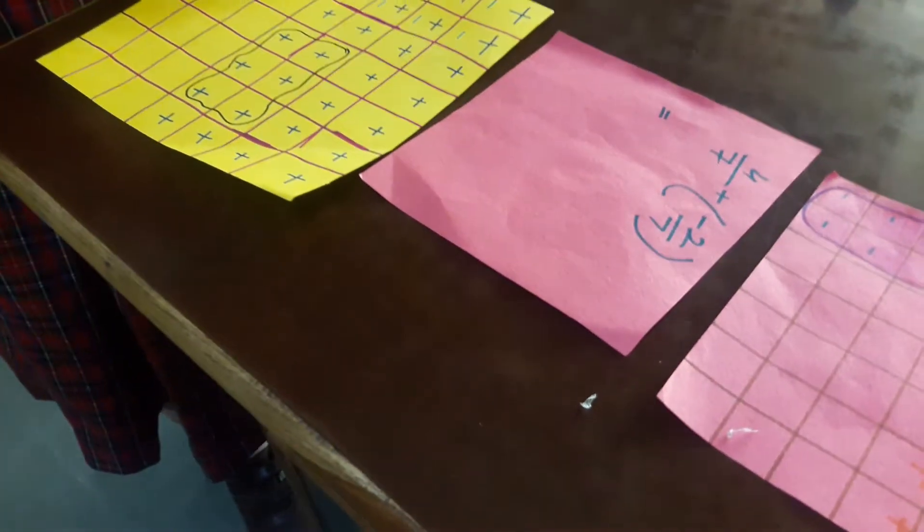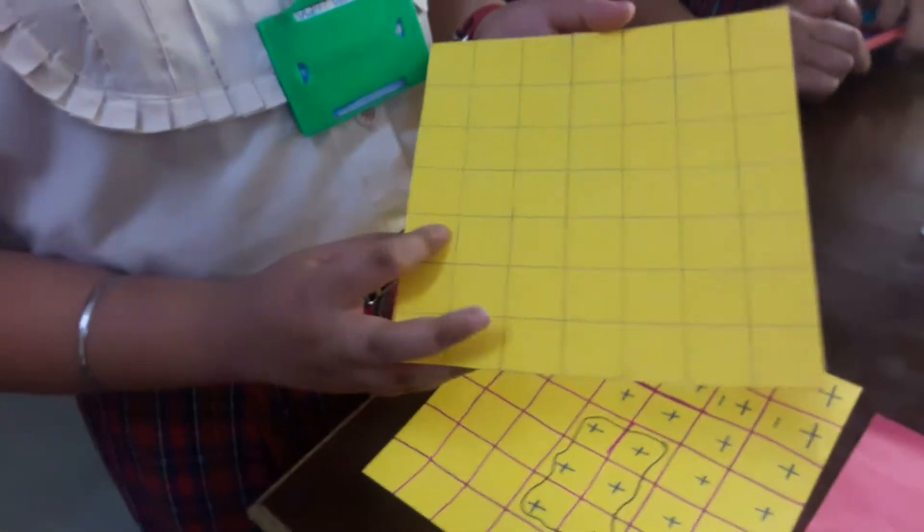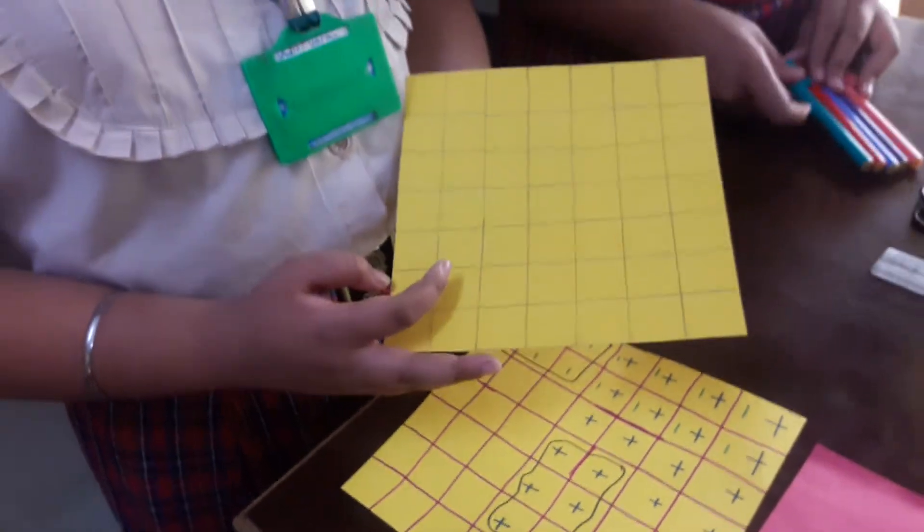We are going to add 4 by 7 plus minus 2 by 7. So we made a grid of 7 by 7, because the denominator of both the rational numbers are 7.